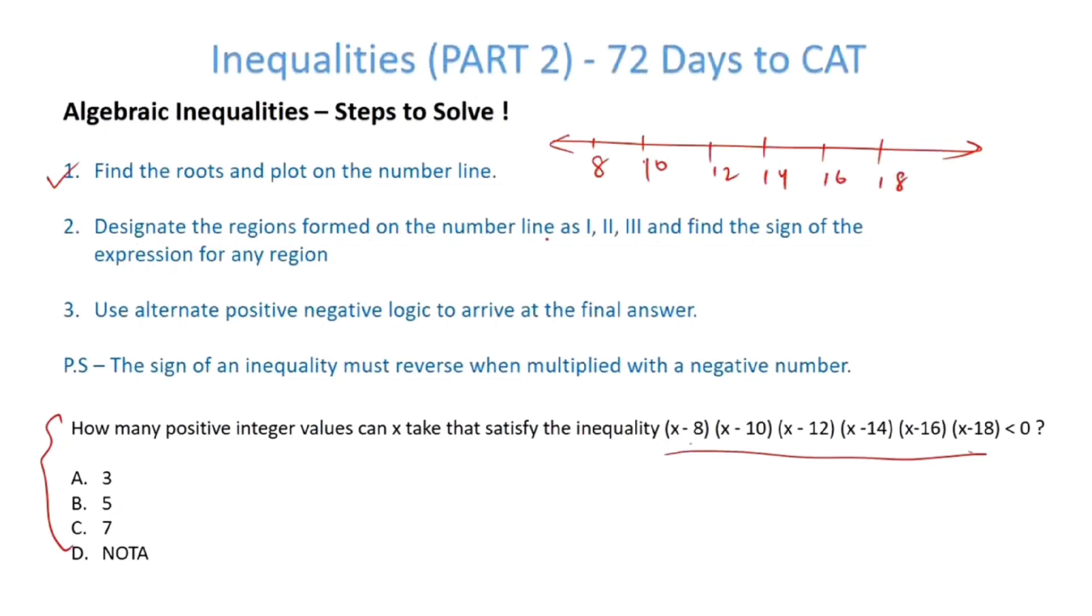Designate the regions formed on the number line as 1, 2, 3 etc. The roots have divided the number line into various regions. So, 1, 2, 3, 4, so on and so forth. Find the sign of the expression for any region.